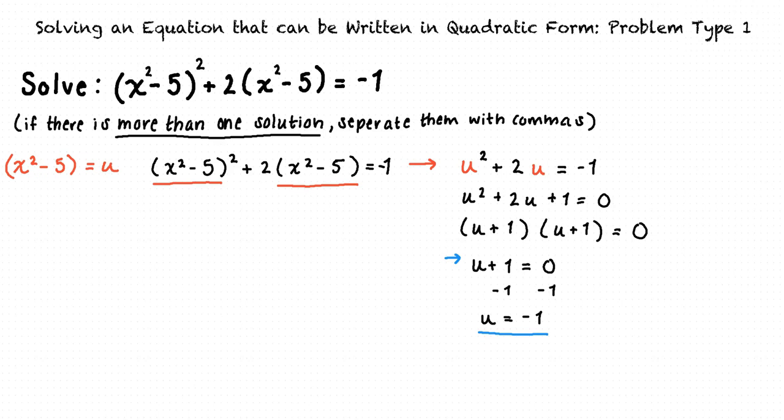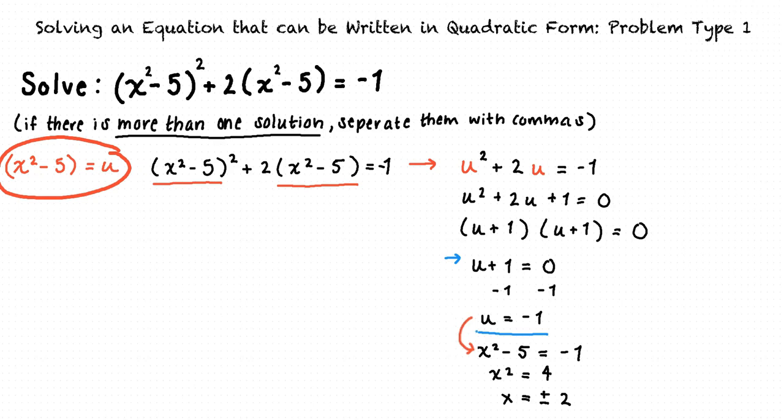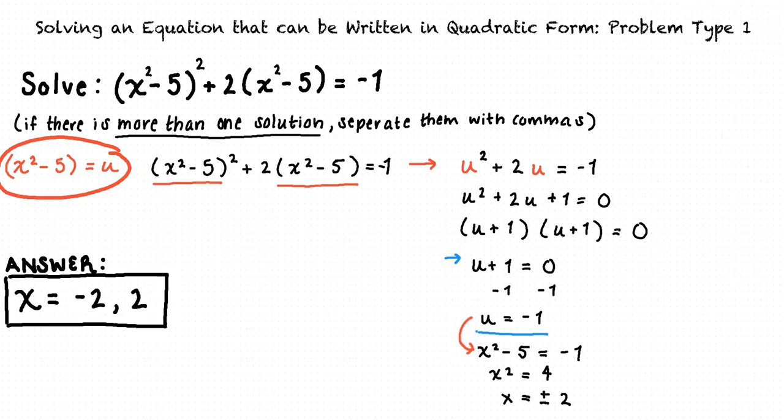And this isn't our final answer yet. We initially replaced x squared minus 5 from our original equation with u to make it easier to solve. Now, we will substitute x squared minus 5 back in for u. This results in x equals plus or minus 2. Our final solution is x equals negative 2 and 2.